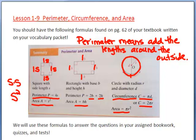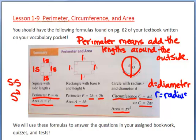Why are there two circumference formulas? It depends on whether you're given the diameter — the whole length across a circle — or the radius, which is just half the length. If you're given diameter, use the formula with D. If you're given radius, use the formula with R. We're going to use these formulas for book work, future quizzes, and the test this coming Friday.